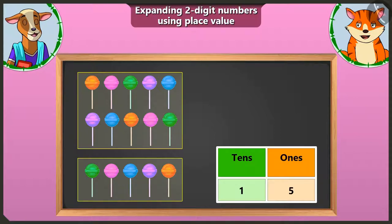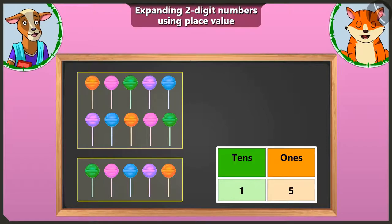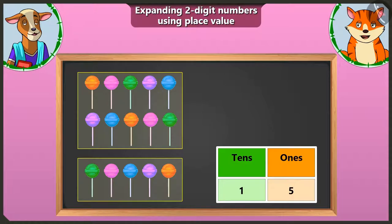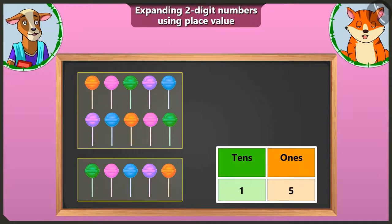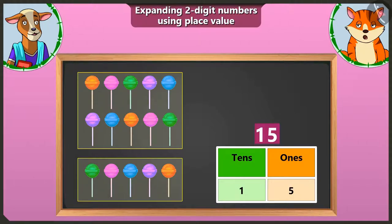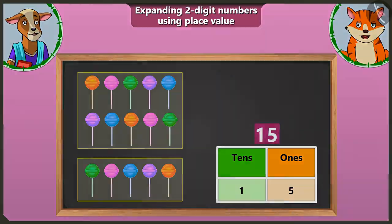Now tell me, one ten and five ones — what is the number that we have? One ten and five ones make the number fifteen. Well done, Billy.